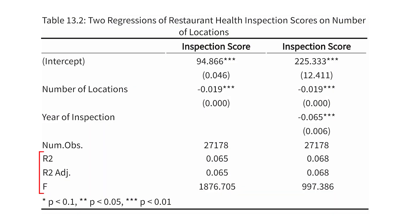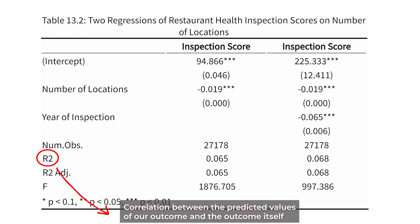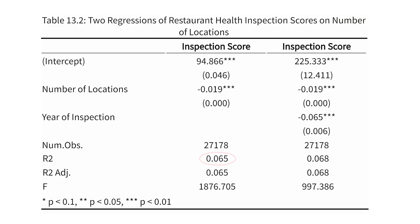The first model fit statistic is R-squared, represented here as R². R-squared is the correlation between the predicted values of our outcome and the outcome itself, squared. It represents the proportion of the variance of the outcome that we have explained with our model. Our R-squared here is 0.065 — so one minus that, roughly 0.935, means 93.5% of the variation is in the stuff we have not explained, and 6.5% is in the stuff we have explained with our model.